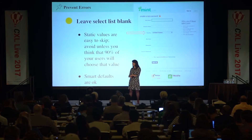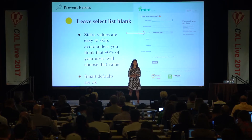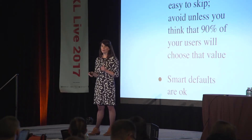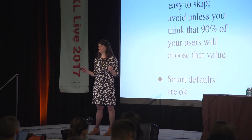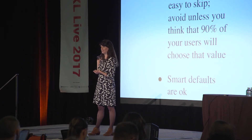Another way we can help prevent errors is to leave select lists blank. Static values are easy to skip, and if you pre-fill one, your users will leave it there. You can pre-fill the value if you think users will select it 90% of the time, but that number really needs to be based on research. Smart fields are okay — for example, using geolocation on an IP to pre-fill a country field, like in the example behind me.